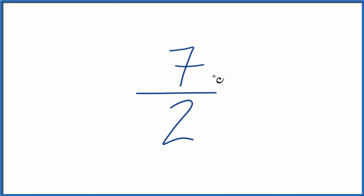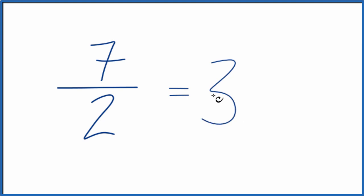First, you could just take 7 and divide it by 2. 7 divided by 2 is 3, and we'd have 1 left over. That 1 left over is 1 half. And you can check this. 2 times 3 is 6, plus 1 is 7. So you have 7 halves. That's kind of a quick way to do it.